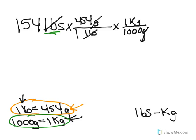So if you type into your calculator, 154 times 454, you get the number of grams. Then if you divide that by 1000, you get kilograms. So typing this into my calculator, I got 69.916 kilograms.